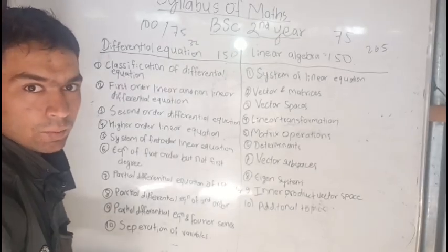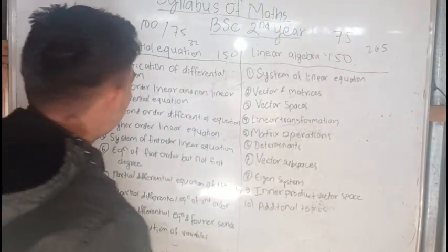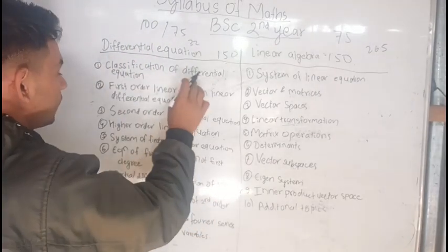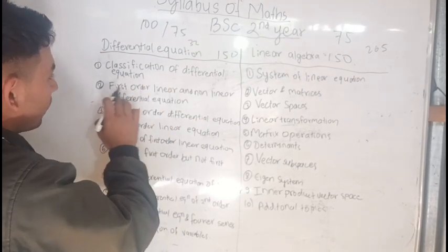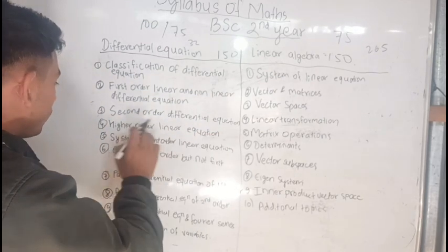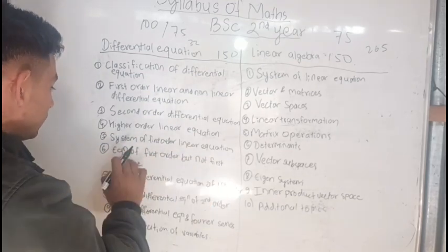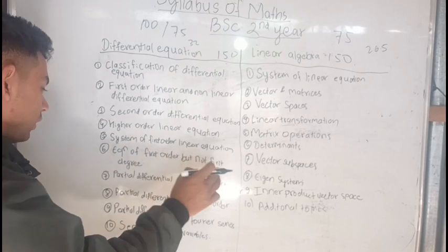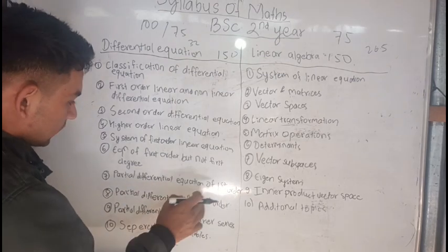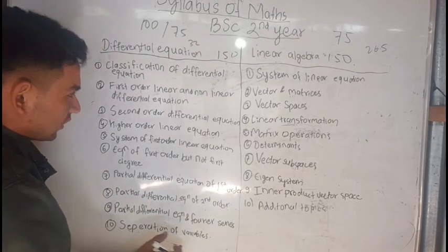Each chapter is equal to one question. The first chapter is the classification of differential equations. Second is first order linear and non-linear differential equations. Third is higher order differential equations. Fourth is higher order linear equations. Fifth is system of first order linear equations. Sixth is equations of first order but not first degree. Seventh is partial differential equations of first order. Eighth is partial differential equations of second order. Ninth is partial differential equations in Fourier series. Tenth is separation of variables.